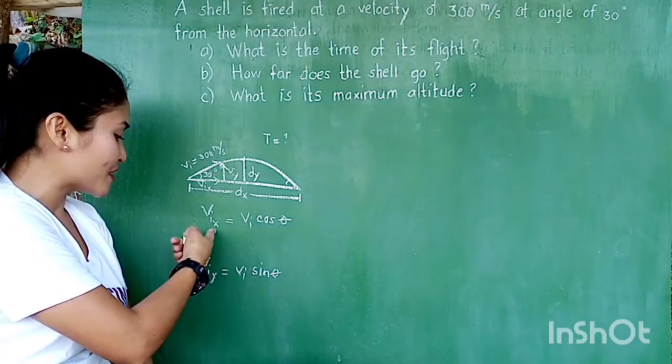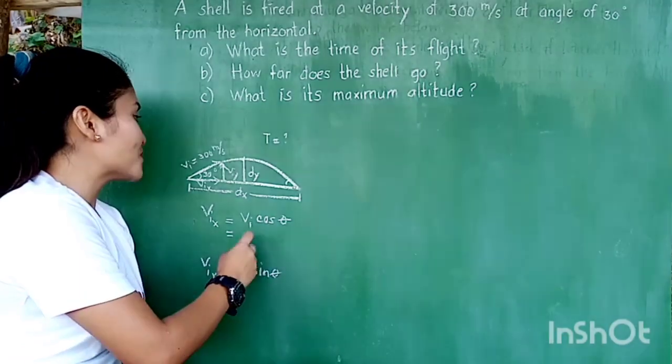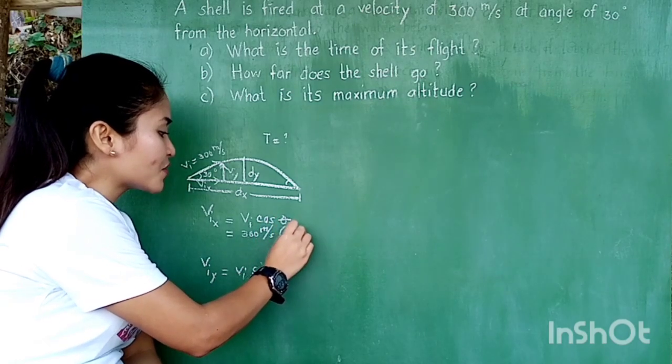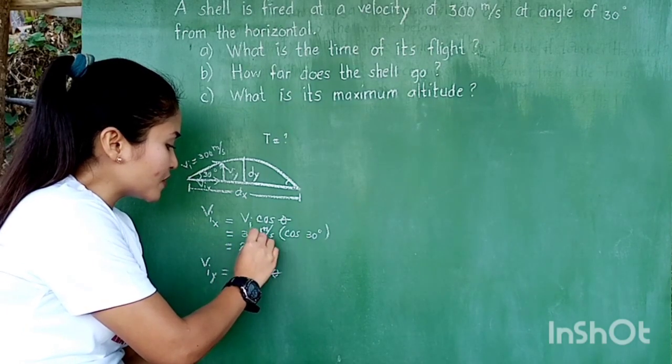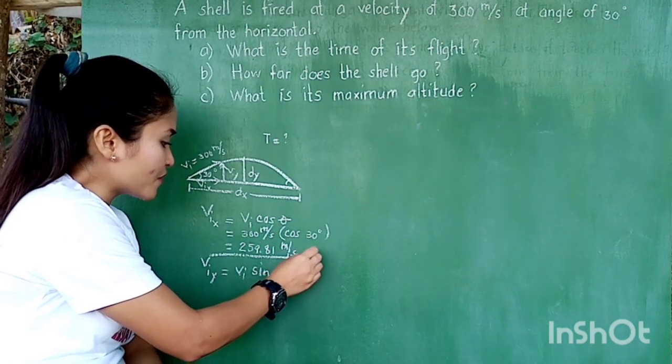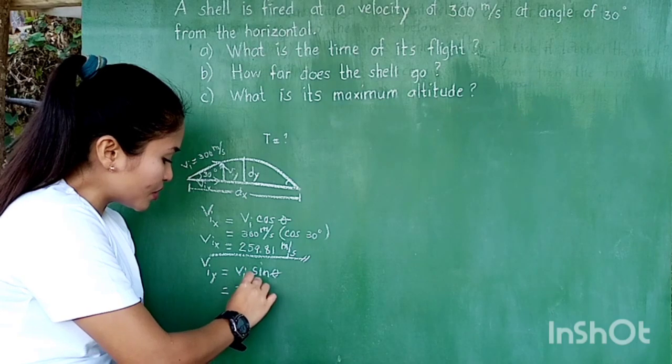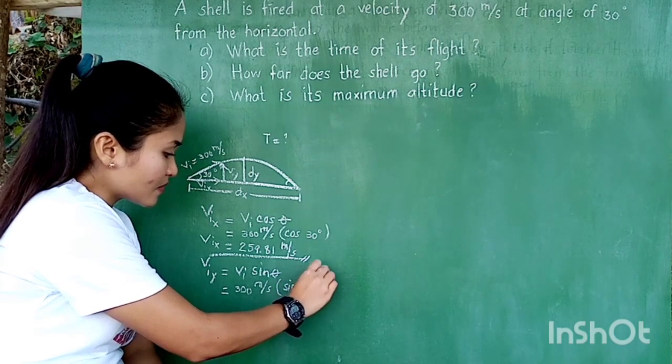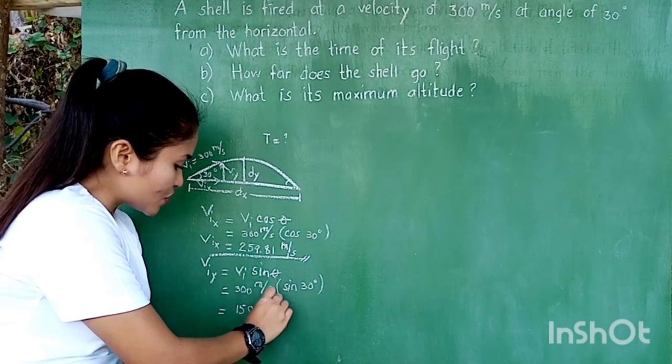Now it will be easy for you to solve for VIX and VIY because you are just going to substitute the values. For VIX, we have 300 meters per second times cosine 30 degrees, and that gives us 259.81 meters per second. For VIY, substitute 300 meters per second times sine 30 degrees, so our VIY is equal to 150 meters per second.